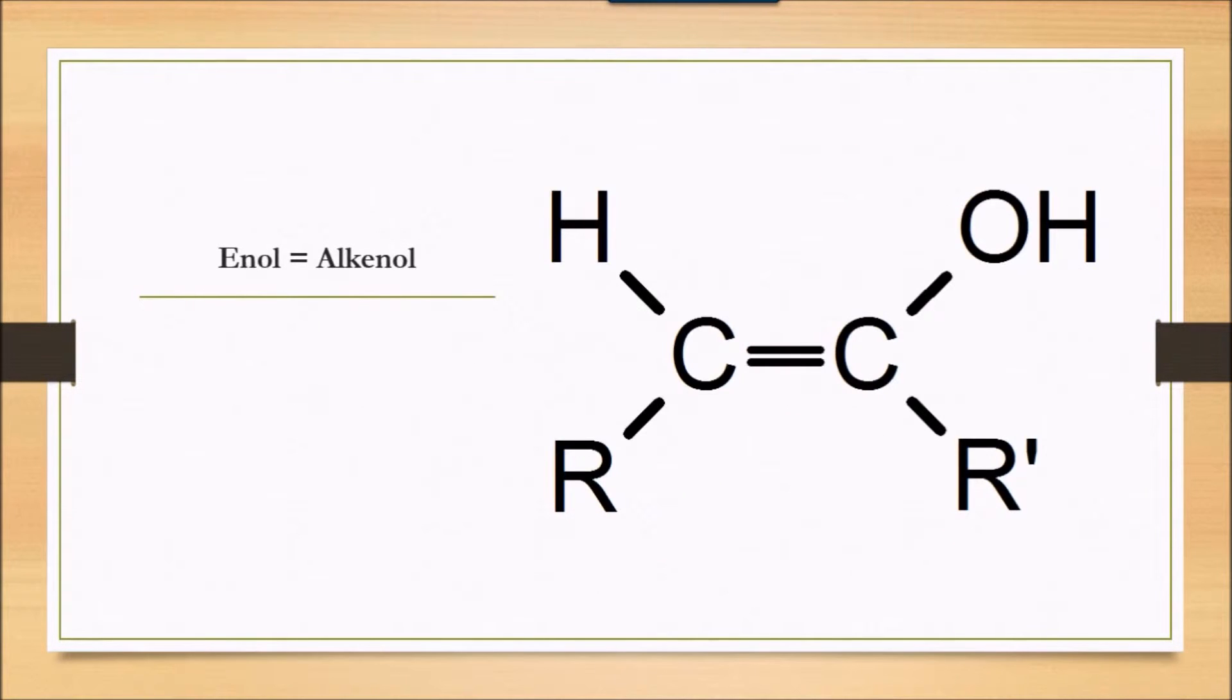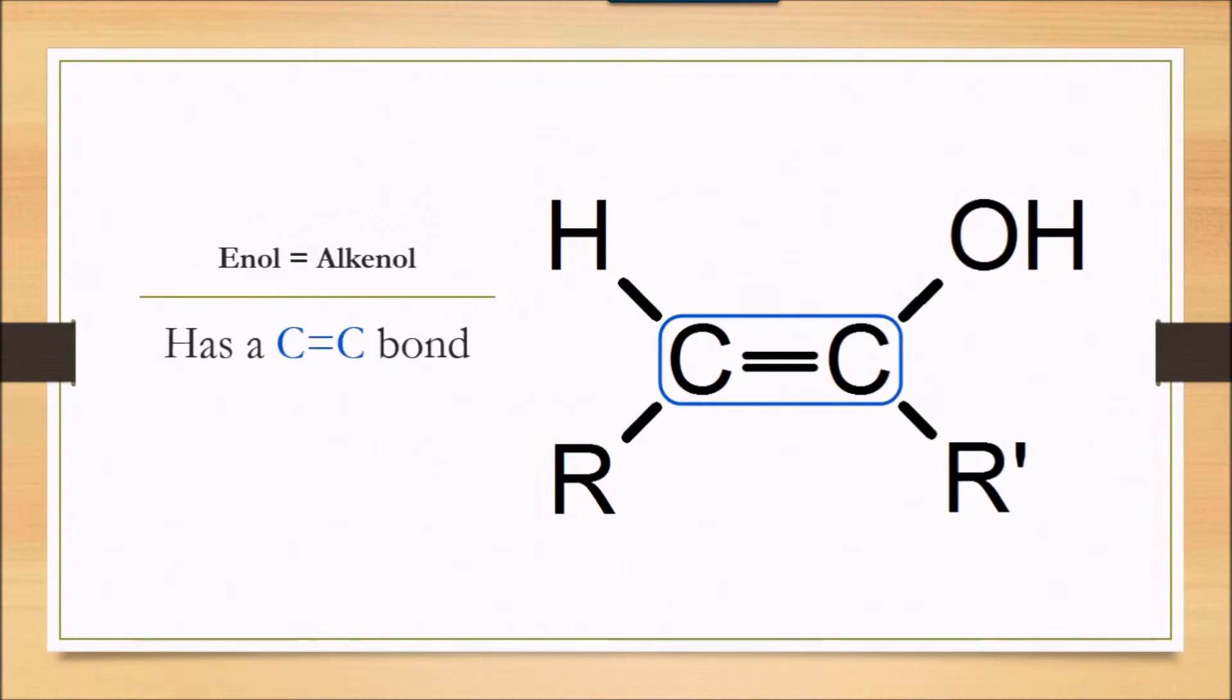The enol part of the name comes from alkanol. This type of molecule has both an alkene group and an alcohol group. The alkene group is a carbon-carbon double bond, like this one. And an alcohol group is also called a hydroxyl group. It's an oxygen atom with a hydrogen bonded to it.